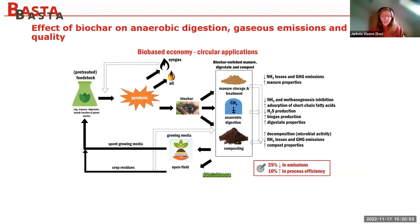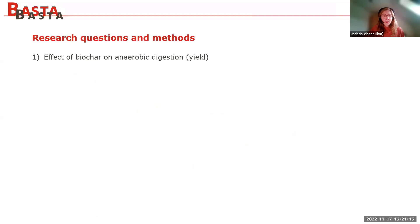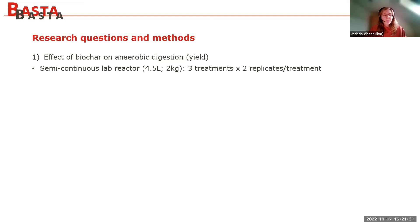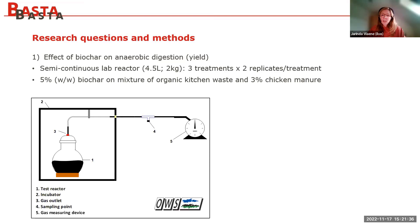This brings me to the second part of the presentation: what happens when you add biochar to anaerobic digestion — to the process, to the digestate, and to the soil after application. For the research questions and methods: first, we evaluated the effect on biogas yields using semi-continuous lab reactors of four and a half liters. We had three treatments and two replicates.